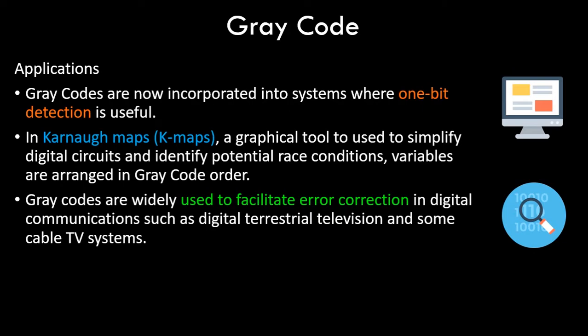Gray codes are usually used where systems require one-bit detection. Since the transition between consecutive values involves a change in only one bit, it can be used to detect those changes. Gray codes are also used in Kmaps — a graphical tool used to simplify digital circuits and identify potential race conditions. We have a separate video series on Kmaps and Boolean algebra if you want to explore those topics further.